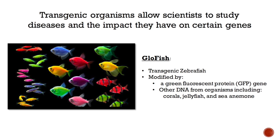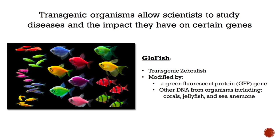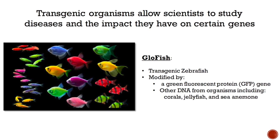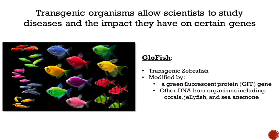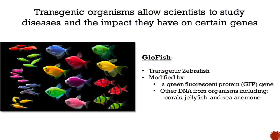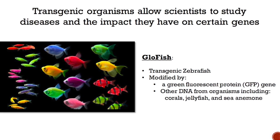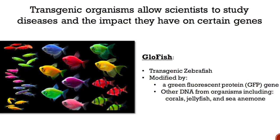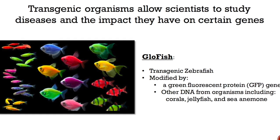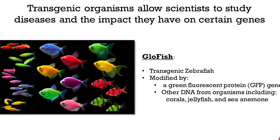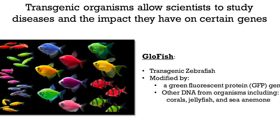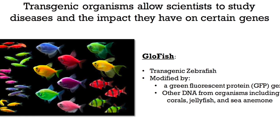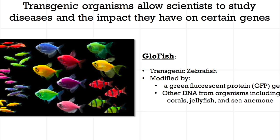Transgenic organisms are great because they allow scientists to study diseases and study the impact that those diseases have on certain genes. One example of a transgenic is a GloFish — a transgenic zebrafish modified by a green fluorescent protein gene called the GFP gene, and it contains DNA from organisms like corals, jellyfish, and sea anemone.